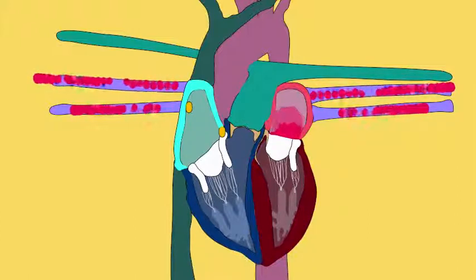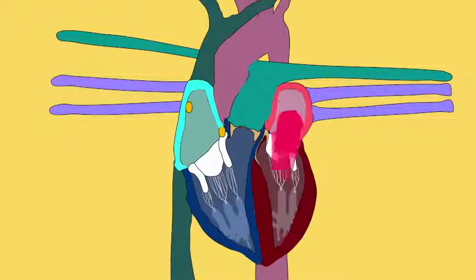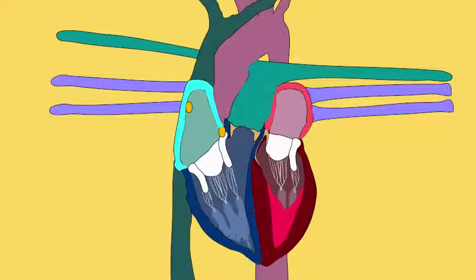When the left atrium contracts, it sends blood to the left ventricle, and when the left ventricle contracts, the red oxygenated blood that it holds can now be pumped to the body's systems, the hand, the foot, the brain, and other organs.